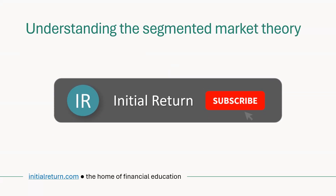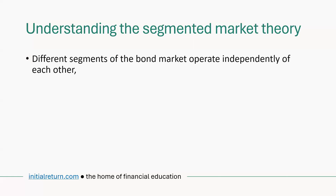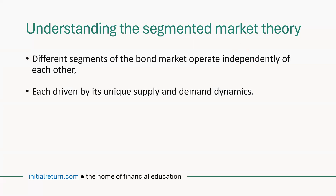Let's try to understand what this segmented market theory is all about. It essentially argues that different segments of the bond market operate independently of each other. What this means is that each segment has its own supply and demand dynamics, and the bond yields are determined separately by those dynamics.